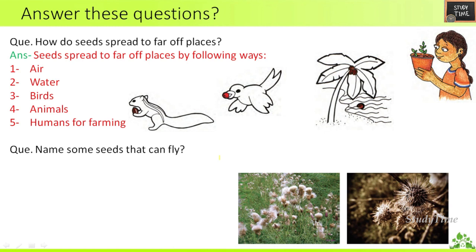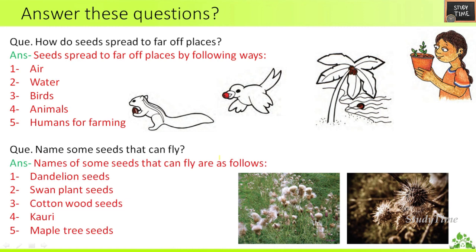How do seeds spread to far off places? Seeds spread to far off places by wind, water, birds, animals, and humans — by all these methods they spread. Name some seeds that can fly: dandelion, swan plant, cottonwood seeds, cowrie, maple tree seeds — all these seeds can fly in air.